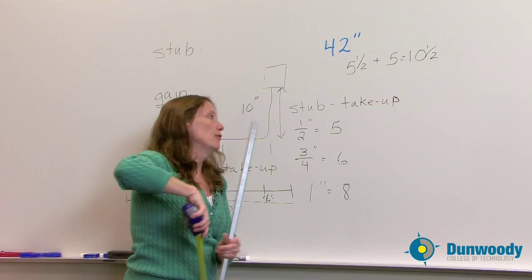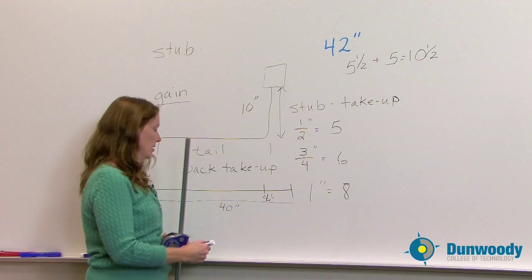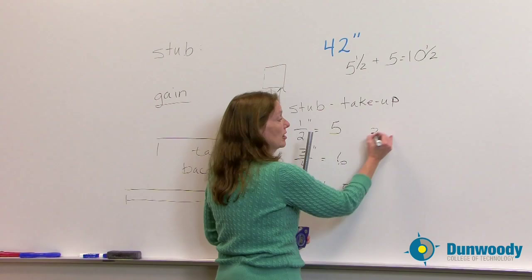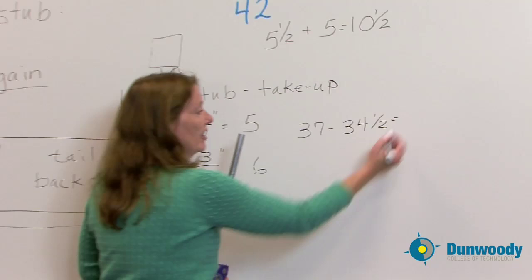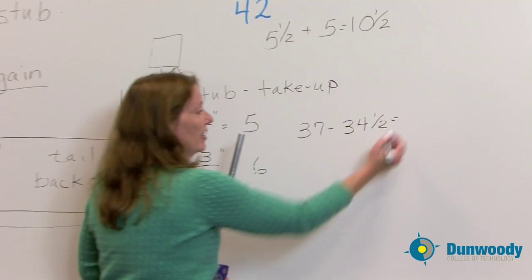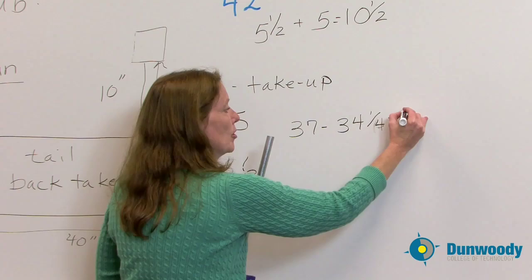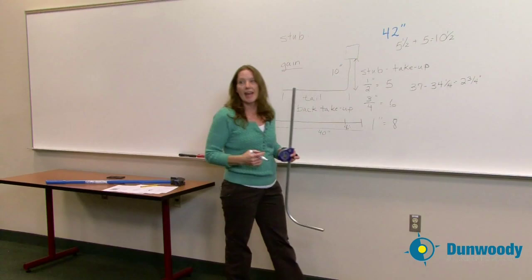So if I have a 34 and a quarter inch tail, and I originally had 37, I've lost a little bit. So I can take that 37 minus my 34 and a quarter, and that gives me then a value of about 2 and 3 quarters of an inch. That is the value I have for my back take up.